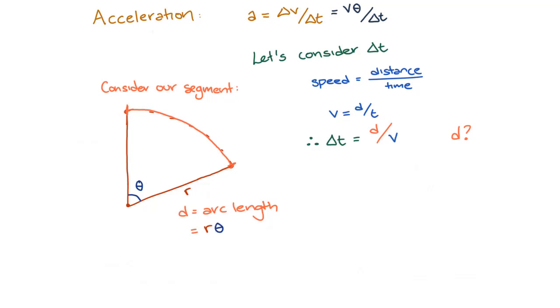We also know that the speed the object is traveling at is equal to v, the speed. We can now plug this back into our change in time to give us a change in time is equal to r theta on v. We now have expressions for both delta v and delta t, so we're almost there.